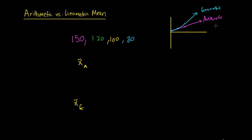So what we want to look at is calculating the arithmetic and the geometric mean for this series of numbers here. We've looked at the arithmetic mean before — there's a video on this — and it says if you take these four numbers, you take the sum of your x observations (the sum of x_i), and you divide it by n, which is the number of observations. This gives you your arithmetic mean.